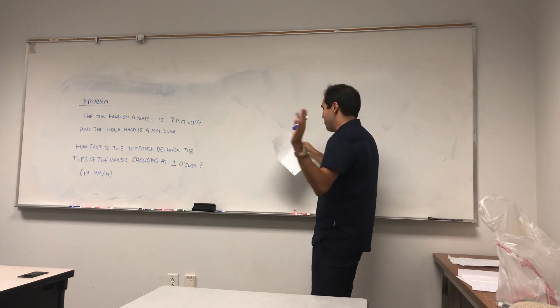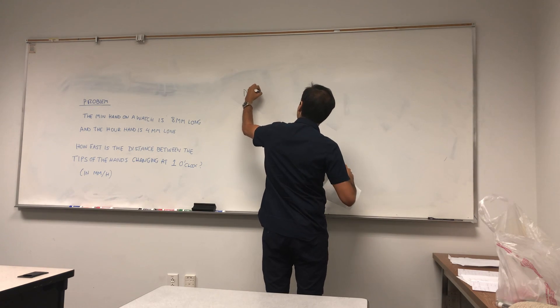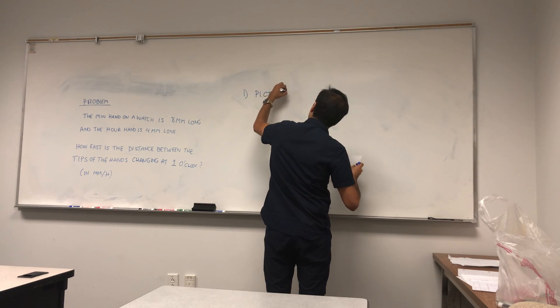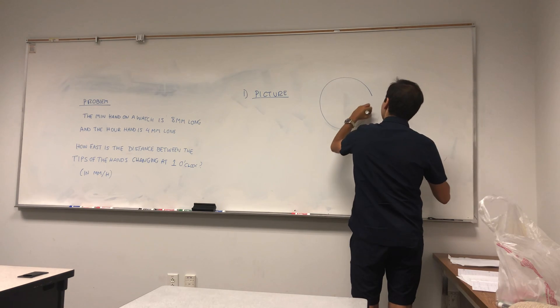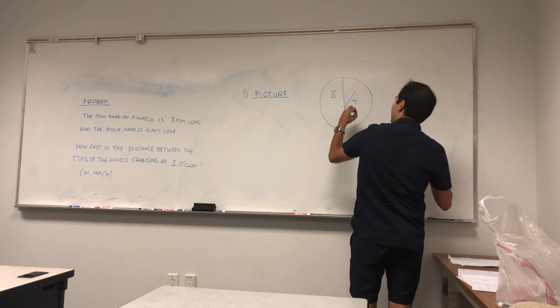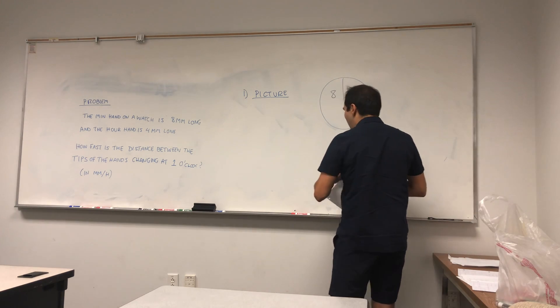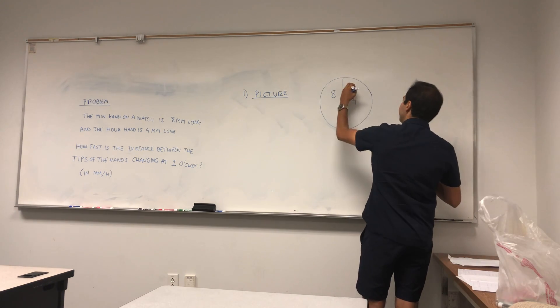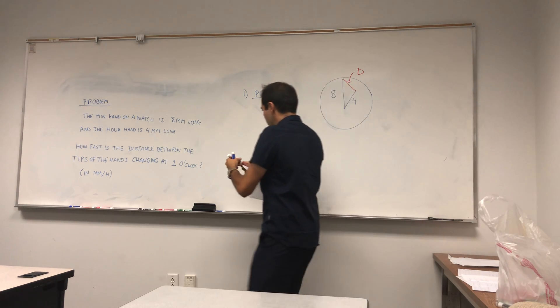So what do we have? We have this clock and it's 1 o'clock, so the minute hand is 8 millimeters long, the hour hand is 4 millimeters long, and what we want to know is how fast is the distance between the two changing.